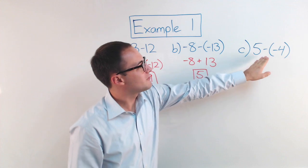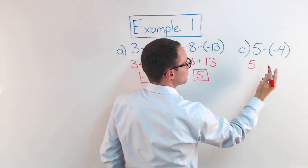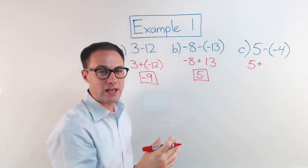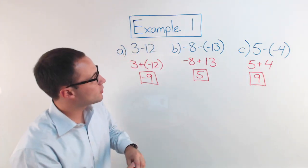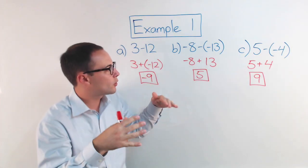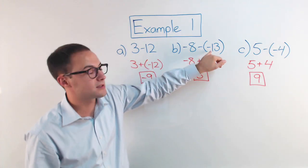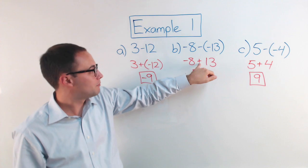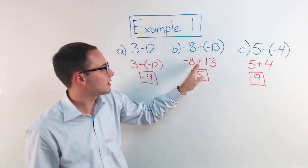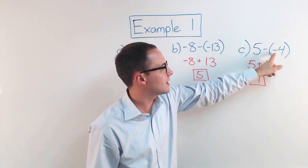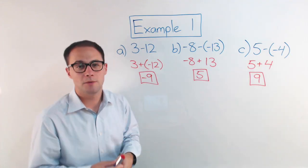The last one, C. 5 minus a negative 4. 5 stays the same. Same thing as adding its opposite. So, that changes to plus. The opposite of negative 4 is 4. 5 plus 4 is 9. And if you also notice, sometimes you'll be able to get a lot quicker with these. If you notice, when you have a subtraction next to a negative, that's just going to become a plus. You can think of those two kind of coming together and creating the plus. The 13 is just the 13. Same thing here. That minus and the negative become the plus, plus 4. So, when you get more comfortable with it, you're going to be able to do those a lot quicker. Here's something to try on your own.